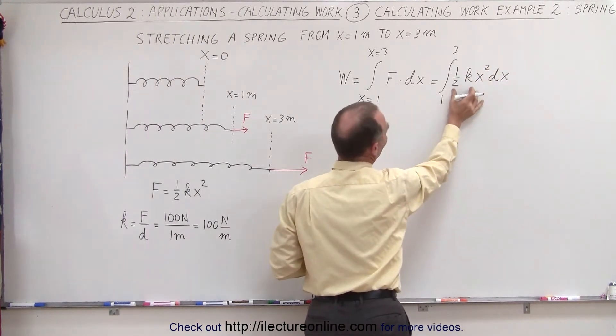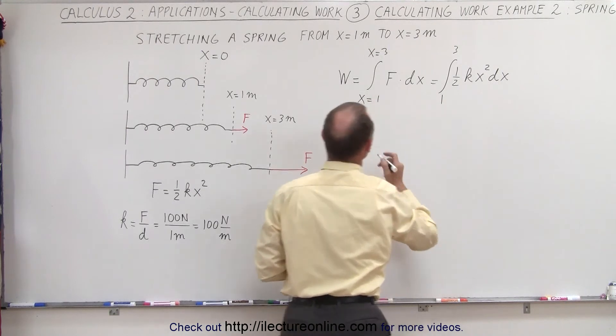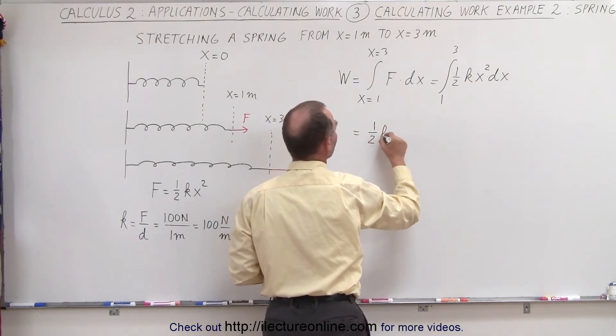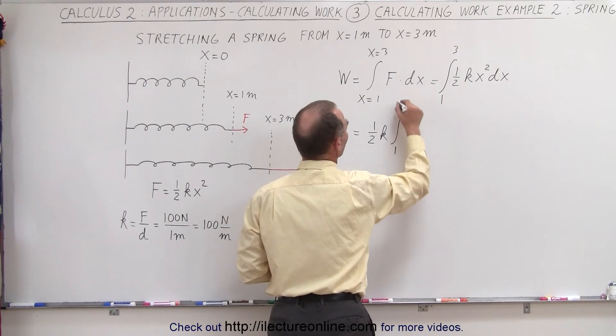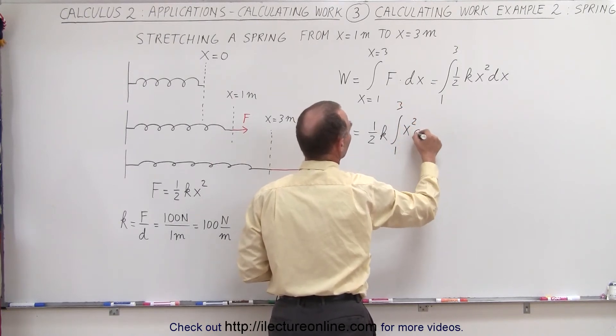And of course, since the 1 half is a constant, we can move that outside the integral sign. So this is equal to 1 half k times the integral from 1 to 3 of x squared dx.